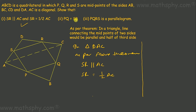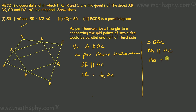Now let's look at PQ equals SR. In triangle BAC, point P on AB is the midpoint of AB, and point Q on BC is the midpoint of BC. PQ is connecting the midpoints of AB and BC. In that case, PQ will also be parallel to AC and PQ will be half of AC. In triangle BAC, as per this theorem, PQ is parallel to AC and PQ is equal to half of AC.